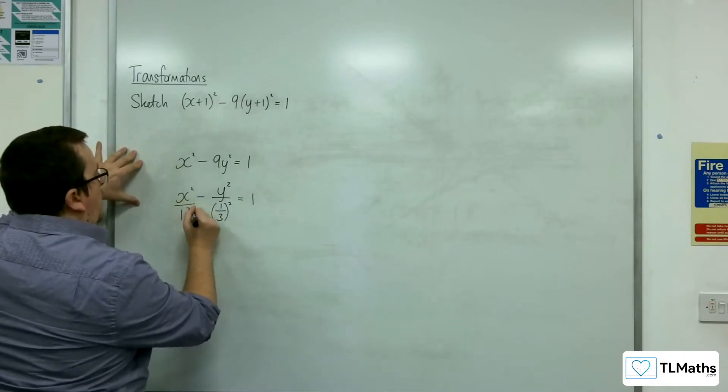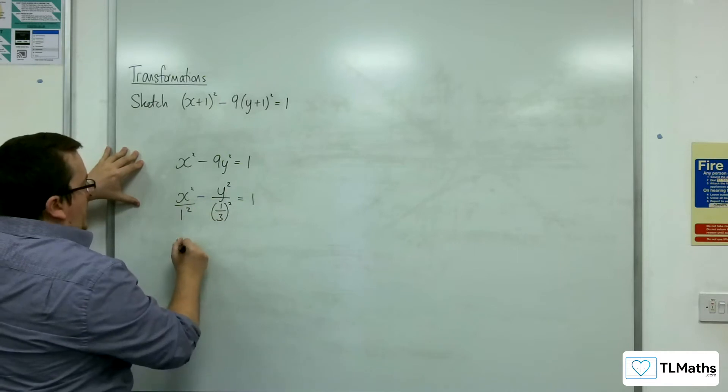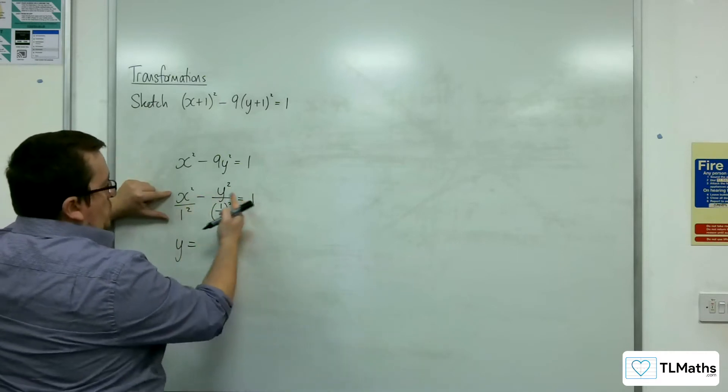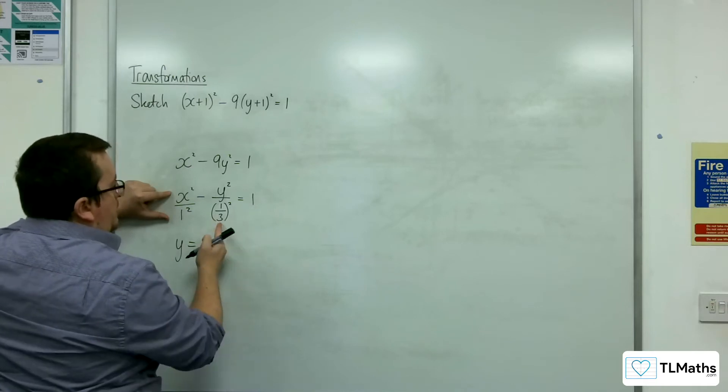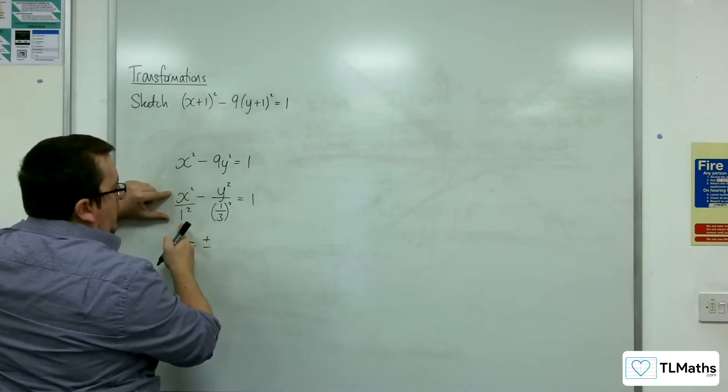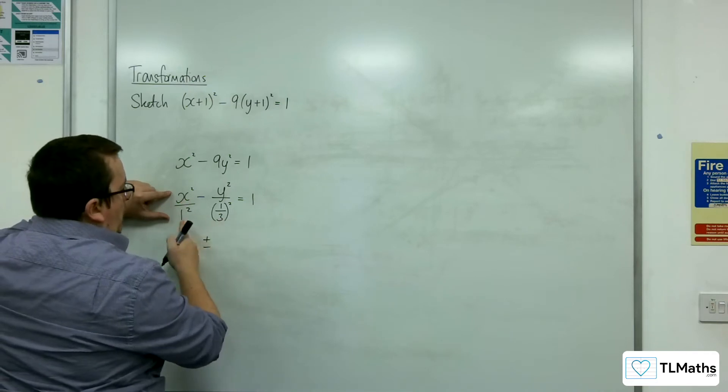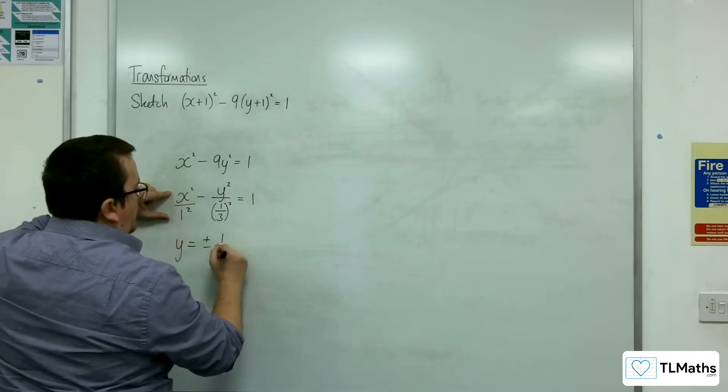So I can write the x² as over 1². So the asymptotes for this graph would be equal to y = ±(b/a)x. So 1/3 divided by 1, so (1/3)x.